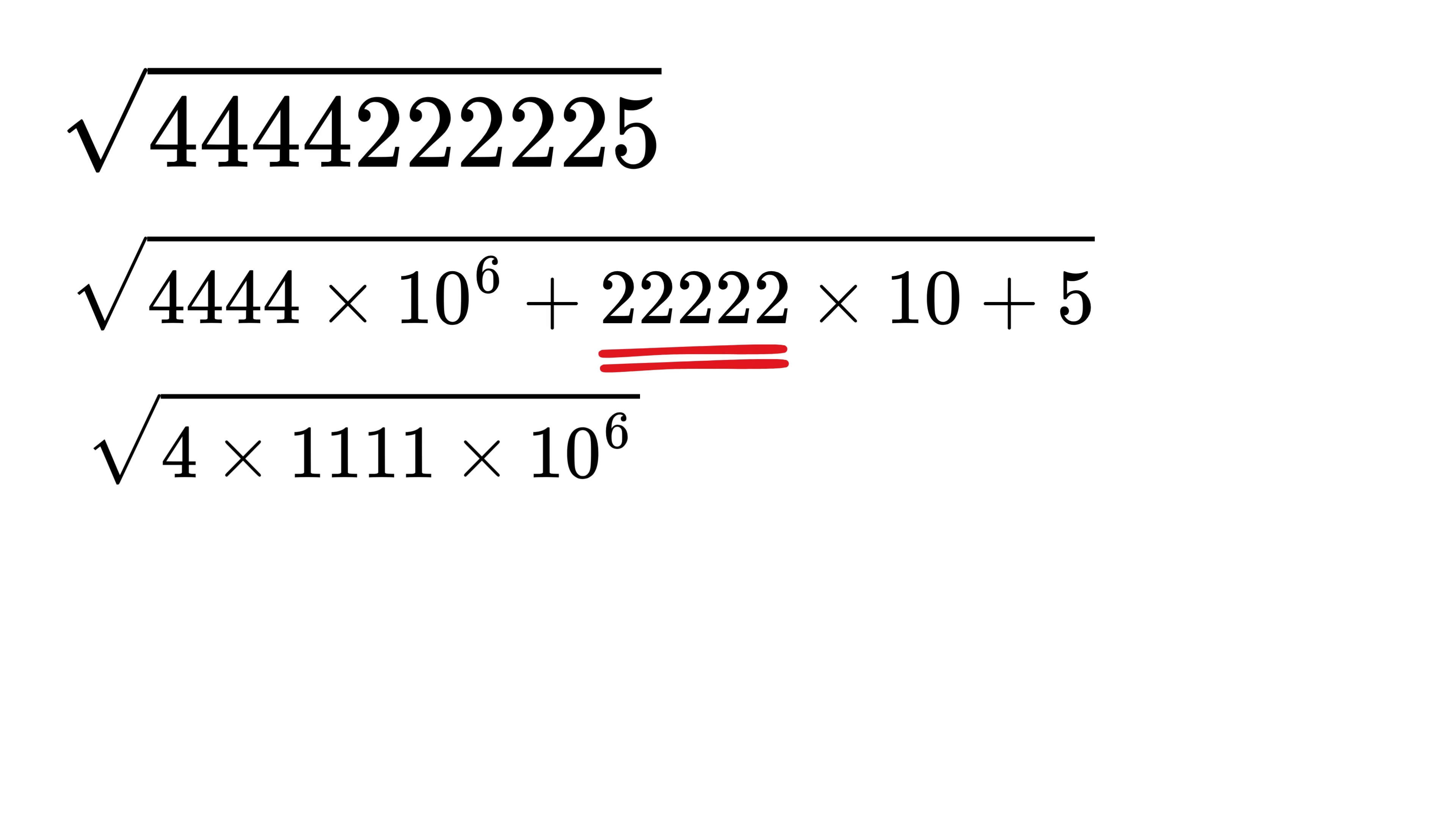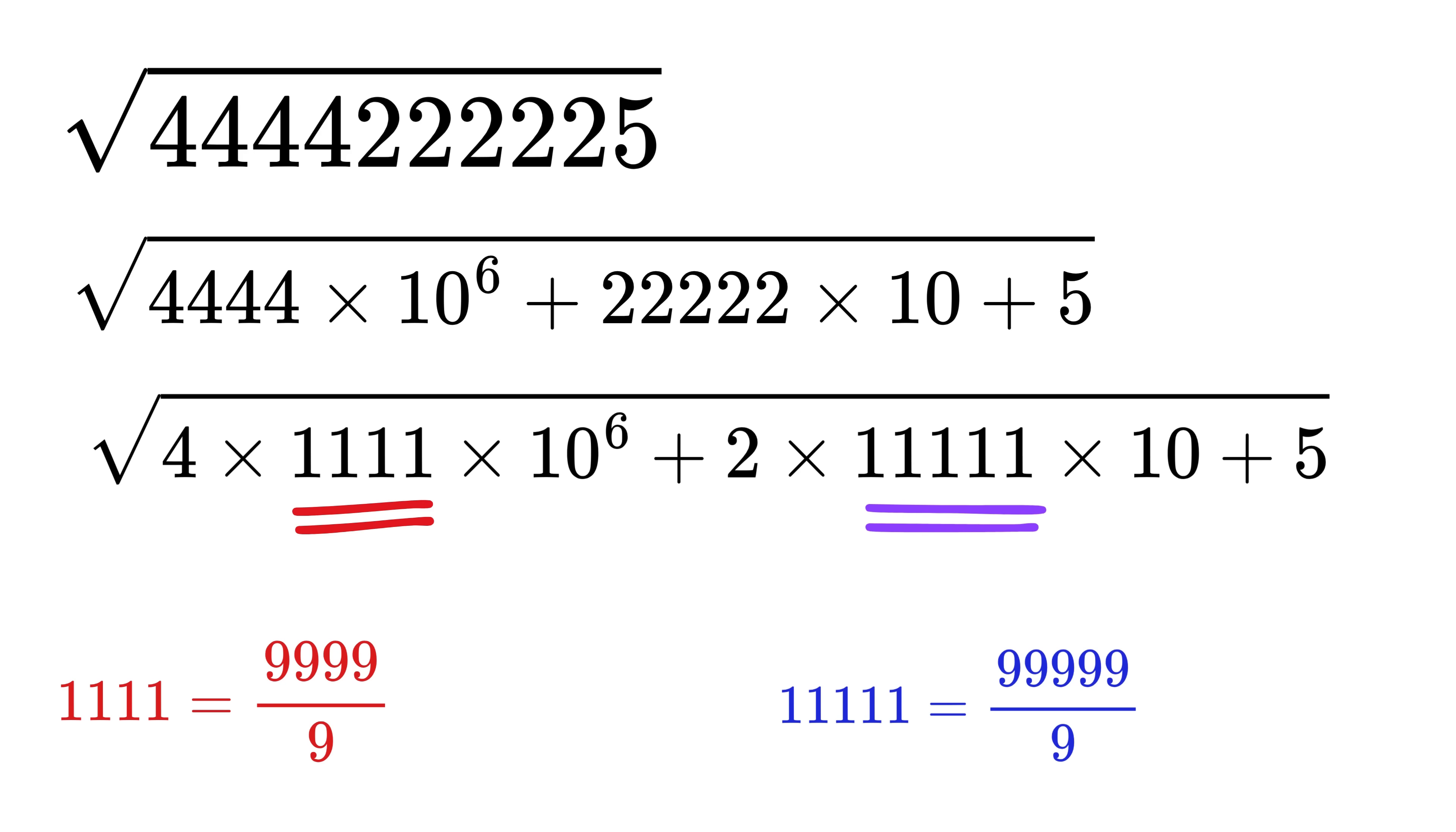Notice how this value is actually four times these four ones, and this number is two times these five ones. Now here comes the magic - these four ones can also be written as four nines divided by nine, and these five ones can also be written as five nines divided by nine.